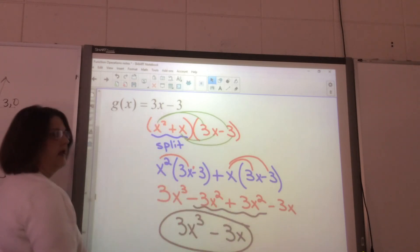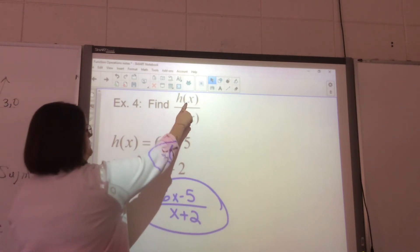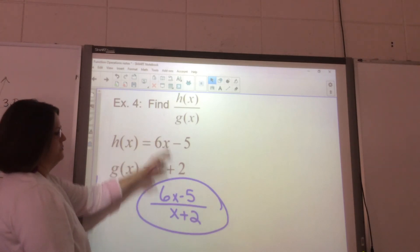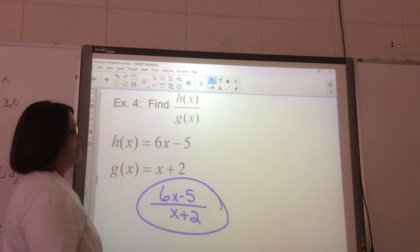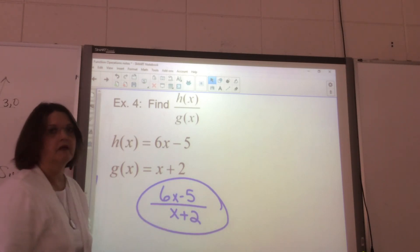For division, I'm finding h(x) divided by g(x). You literally just put this one on top of this one. If by chance this factors, you would take it down further and do more, but this does not factor, so you just write it like that.